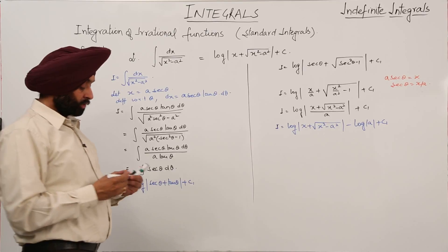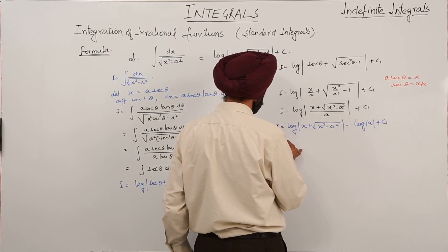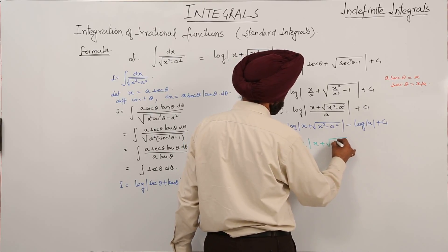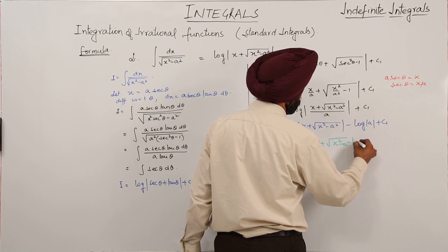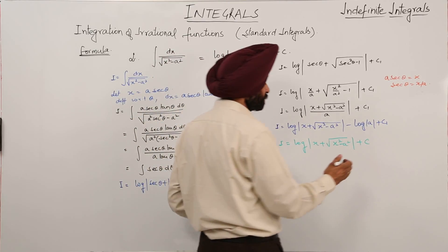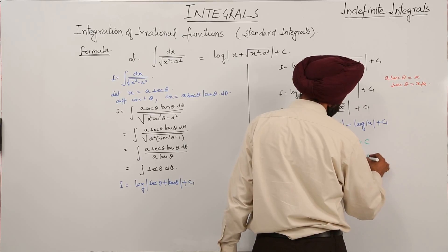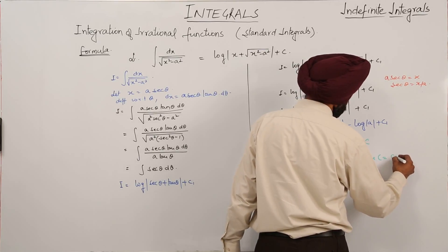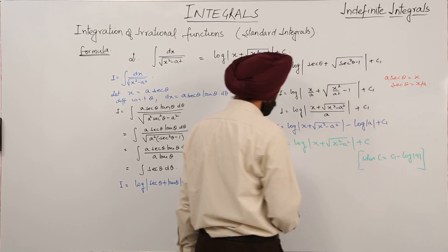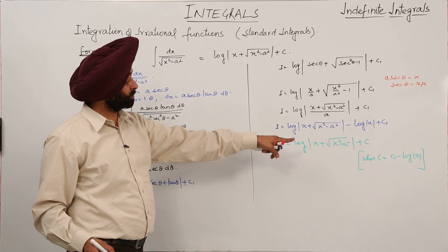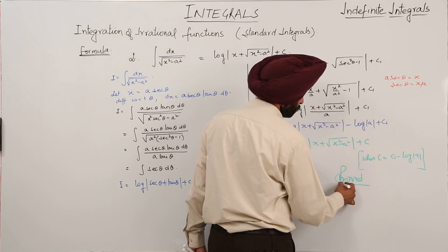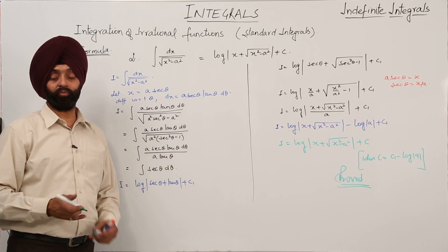So finally we have log|x + √(x² - a²)| + c, where c equals c1 minus log|a|, since log a is a constant term and we merge it into c. And the formula was log|x + √(x² - a²)| + c. Proved. So like this we can easily prove this formula.